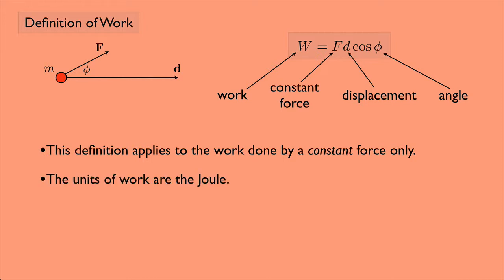The units of work are the joule. In SI units, a joule is — since F is in newtons and D is in meters — a newton times a meter. The cosine of phi is unitless. A newton is a unit of force, and force is mass times acceleration: kilograms times meters per second squared. Combined with the meters from D, you get kilograms times meters squared per second squared — which is why we prefer to just call that a joule.